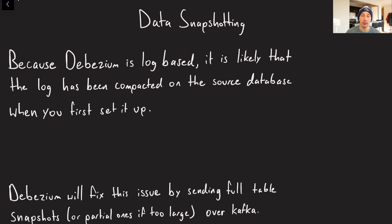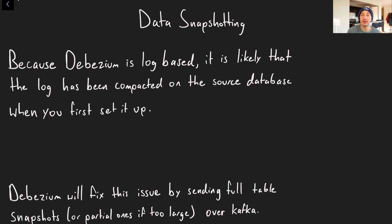Data snapshotting is a small but important point. Debezium is log-based, and if you have something like a write-ahead log, eventually it's going to be compacted because the write-ahead log can't grow infinitely — otherwise your database's hard drive would run out of storage. Eventually you compact the write-ahead log, squeezing together writes to the same key and keeping only the most recent ones. So the question is, how does Debezium handle a database that already has a million writes and a compacted log? Basically, Debezium will send a full table snapshot, or you have the option to send only partial snapshots over Kafka, and then you can handle those in your downstream consumers.